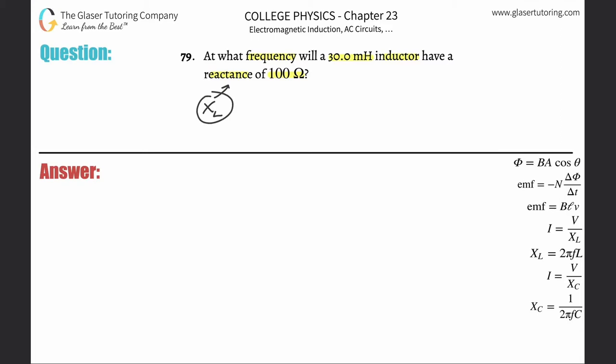inductive reactance, therefore it's X_L. If we notice over here on the right hand side, we have a formula that says the inductive reactance equals 2π multiplied by the frequency of oscillation multiplied by the inductance. So to find the frequency, I have to solve this for f.